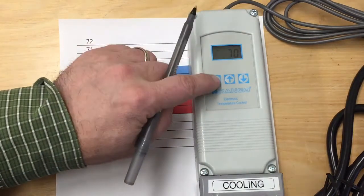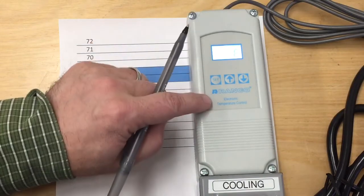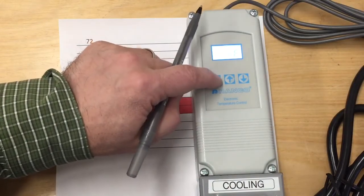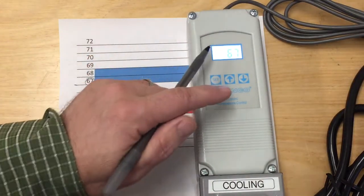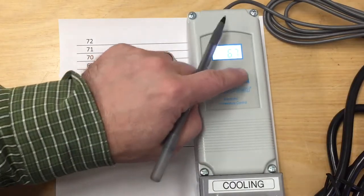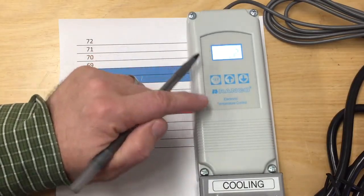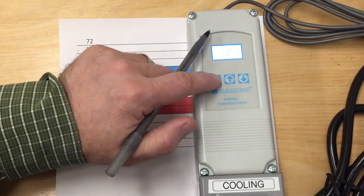So let's show you how to set it up on the Ranko. First hit set, we're going to do Fahrenheit, and hit set and enter 67 degrees. We can go up and down from there. Hit set, differential two, hit set again, and we're choosing cooling.